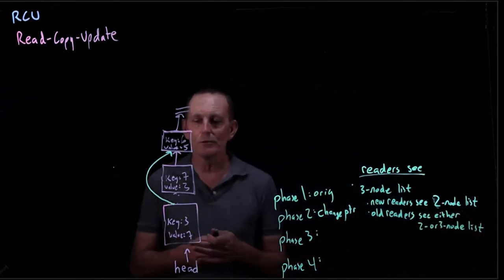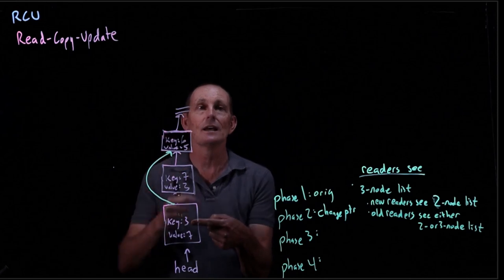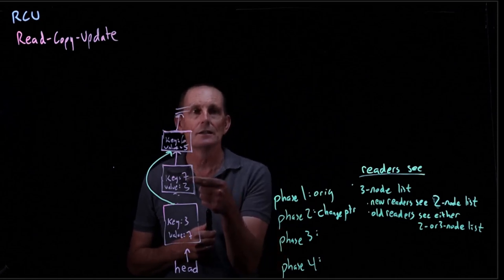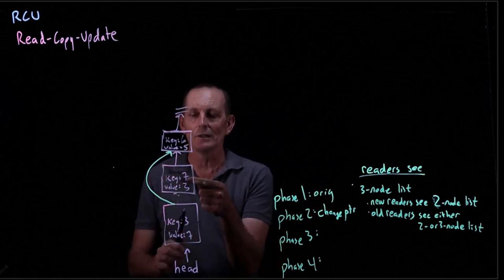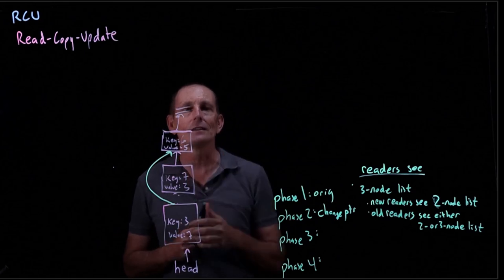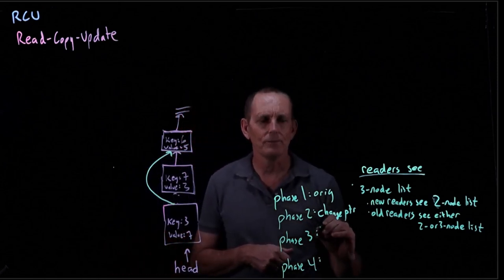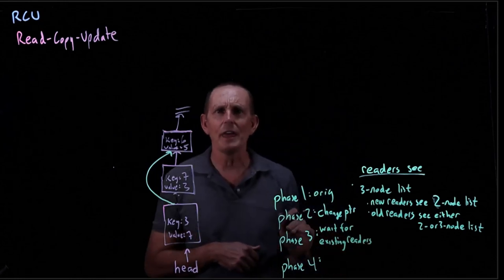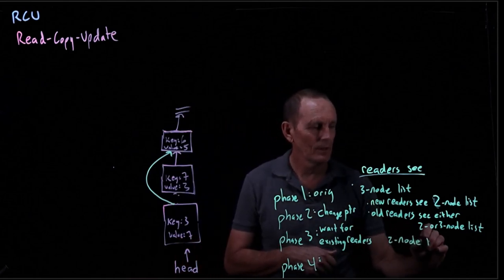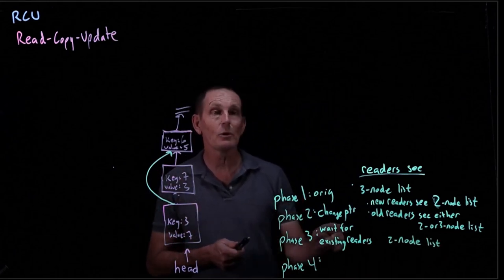Why two or three? It depends where the reader is. If a reader is partway through the list when this change happens, when it actually reads the next field it will see a two-node list. On the other hand, if a reader is further along, it will see a three-node list because it saw this node, this node, and will follow the next field to the third. Phase three: we wait for existing readers. After that, readers see a two-node list, because all old readers that could have possibly seen three are gone.